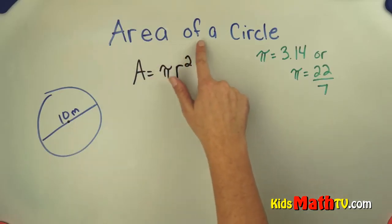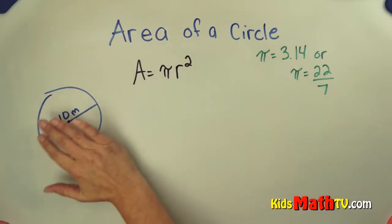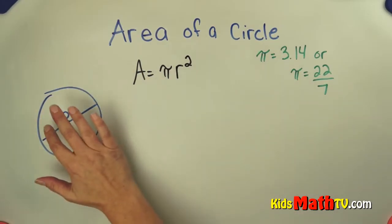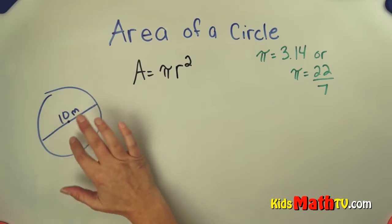In this lesson we will find the area of a circle. The area means how much space is inside the circle or how many squares could I make inside the circle.